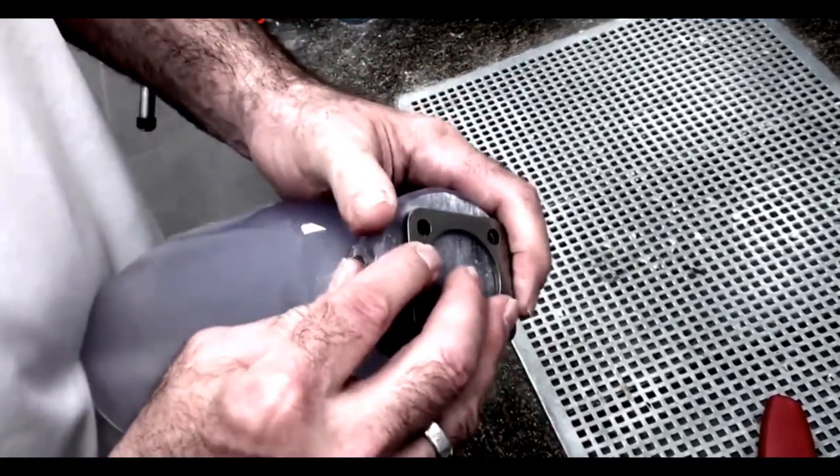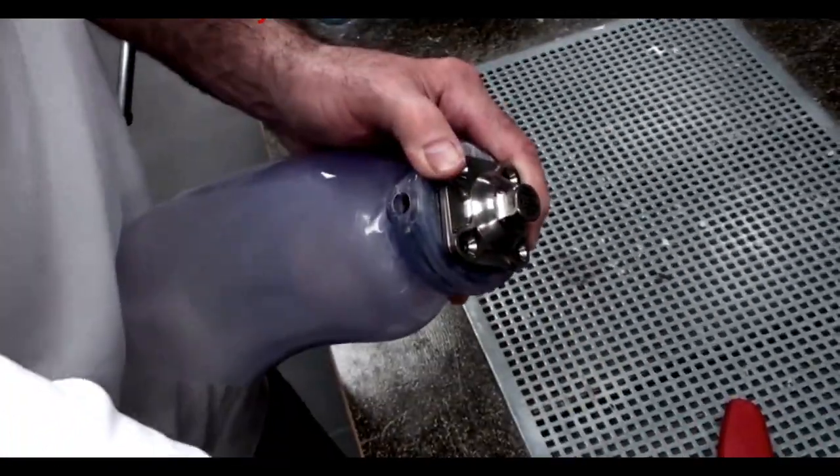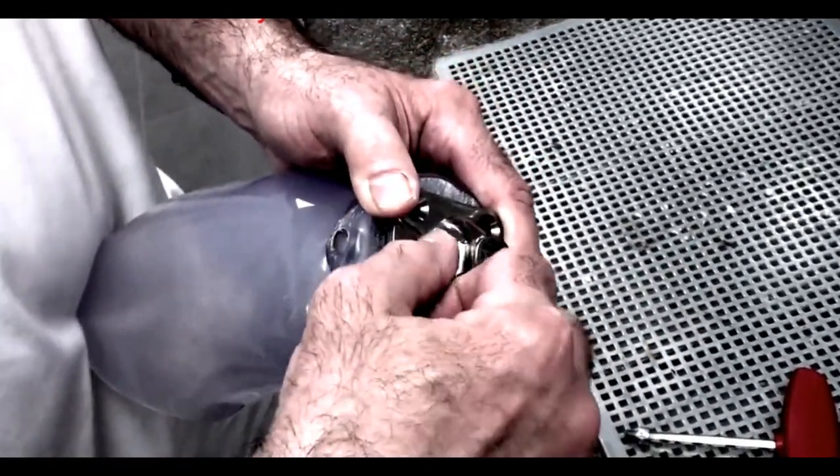Then you need to apply the spacer plate and attach componentry so that the rest of the prosthesis can be assembled.